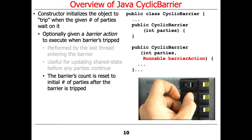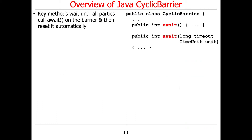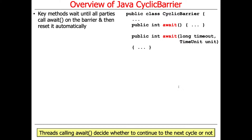The barrier's count is automatically reset to the number of parties after the barrier is tripped. The key methods in this class are used to wait until all parties call await on the barrier and then reset it automatically. The threads that call await can decide whether to continue on to the next cycle or not.